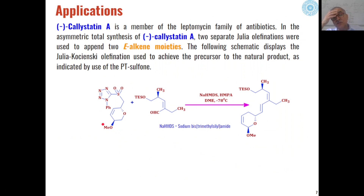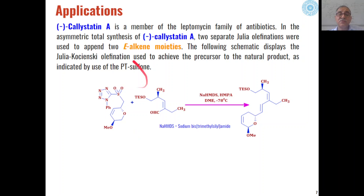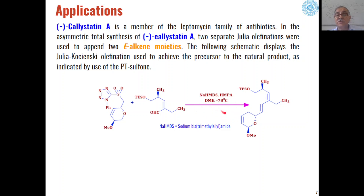Julia olefination has also been used for the synthesis of the leptomycin family of antibiotics; specifically, calystatin A has been synthesized through Julia olefination. When an n-phenyl tetrazole sulfone derivative is reacted with an aldehyde in the presence of sodium bis(trimethylsilyl)amide as the base and hexamethylphosphoramide (HMPA) as co-catalyst in DME as solvent at −78°C, it gives the E-alkene moiety of calystatin A as the product.